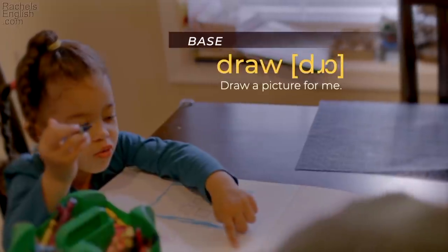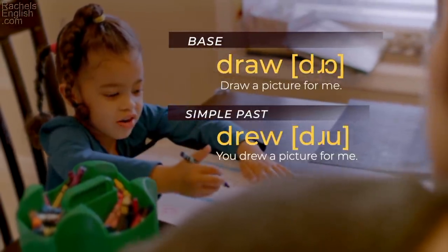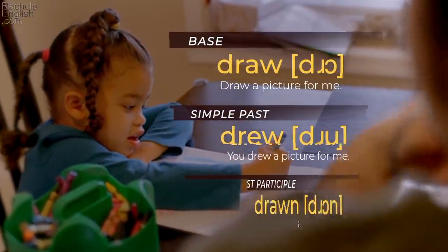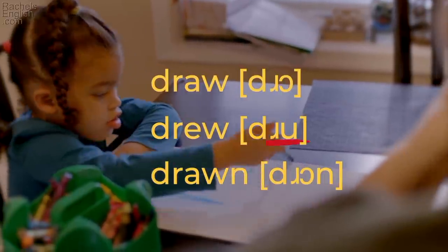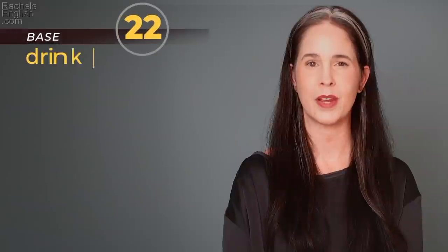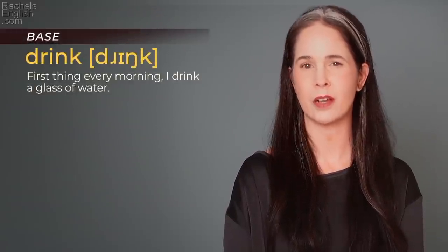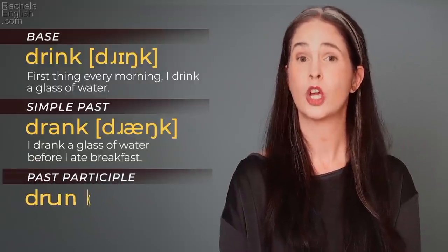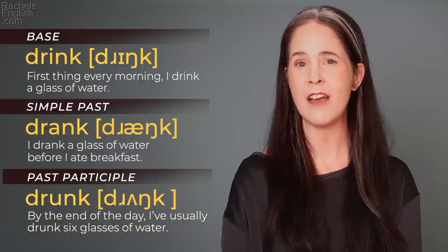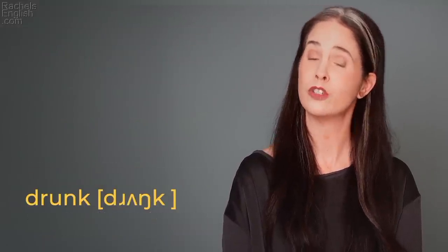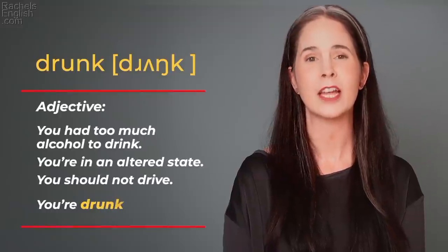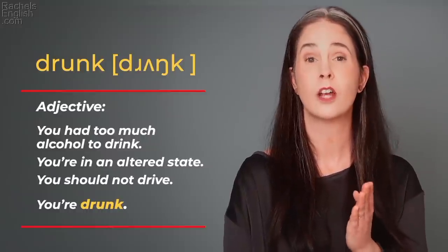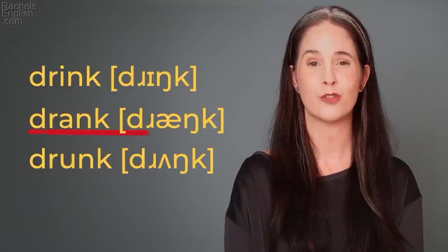Draw — 'Draw a picture for me.' Simple past: drew — 'You drew a picture for me.' Past participle: drawn — 'You've drawn so many pictures.' Draw, drew, drawn. Drink — 'First thing every morning, I drink a glass of water.' Simple past: drank — 'I drank a glass of water before I ate breakfast.' Past participle: drunk — 'By the end of the day, I've usually drunk six glasses of water.' Note: drunk as an adjective means having had too much alcohol. Drink, drank, drunk.